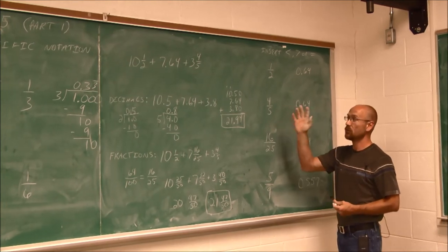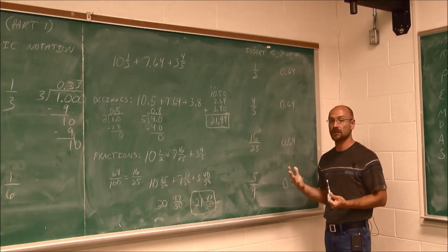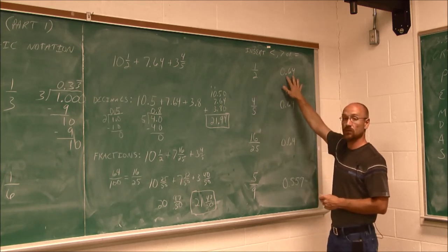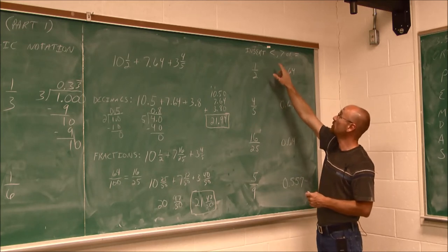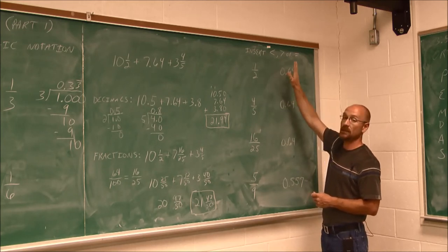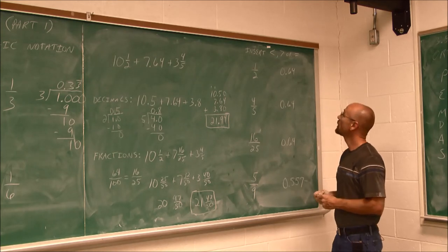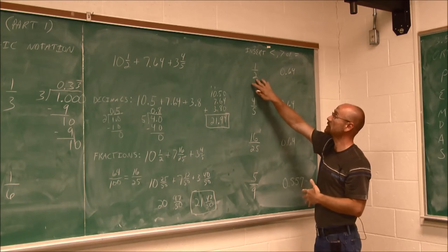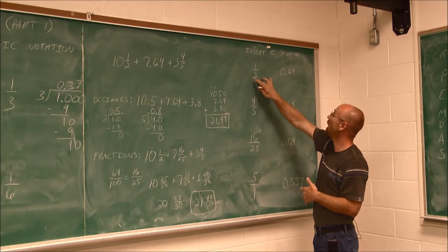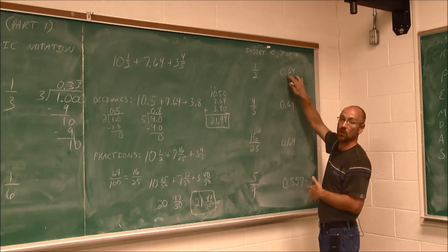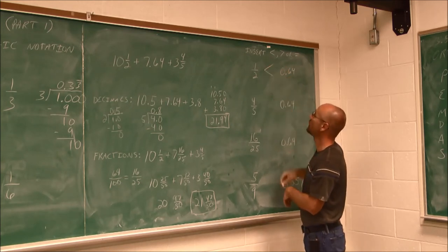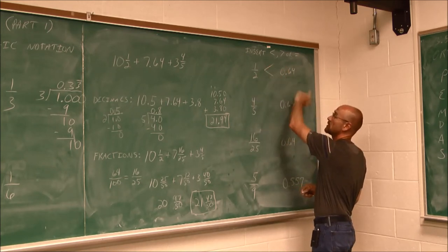When it comes to converting fractions to decimals, sometimes we have to do a little bit of an assessment. We worked with the fraction 1 half and 0.64. We want to insert whether the fractions or the decimals are less than, greater than, or equal to. If we look at this 1 half, we can write this as a decimal. We know that this is 0.5. 0.5 is less than 0.64. So 1 half is less than 0.64.